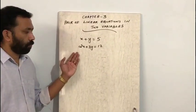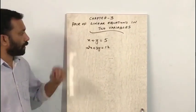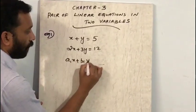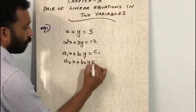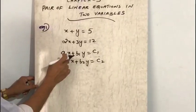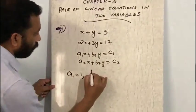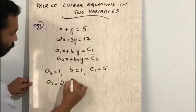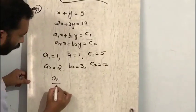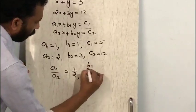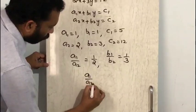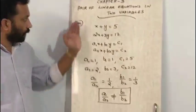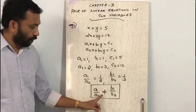Without solving a pair of linear equations, we can predict the nature of the solution. Comparing Example 1 with the standard form a1x plus b1y equals c1, a2x plus b2y equals c2, we get: a1 equals 1, b1 equals 1, c1 equals 5, a2 equals 2, b2 equals 3, c2 equals 12. So a1/a2 equals 1/2 and b1/b2 equals 1/3. Since a1/a2 is not equal to b1/b2, the condition for unique solution is: a1/a2 ≠ b1/b2.